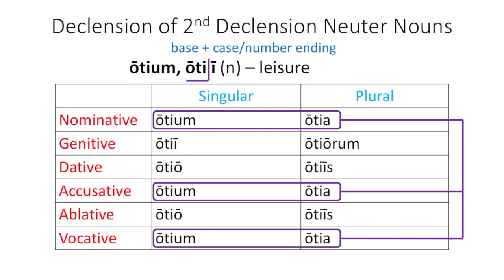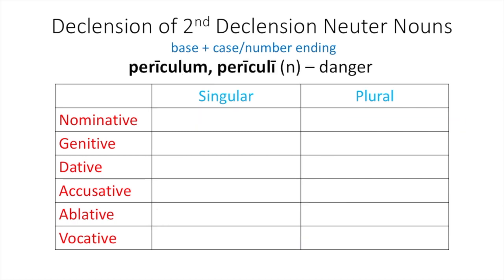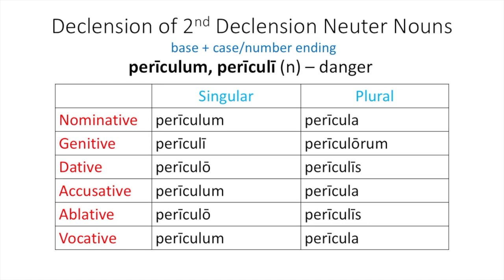Now it's your turn. Take another vocabulary word, periculum, periculi, meaning danger, and decline it as another second declension neuter noun. Pause the video and then resume once you have completed this chart. Please use the answer chart to check your answers to make sure that you're correct, and change the ones you don't have correct so that you have accurate notes going forward.